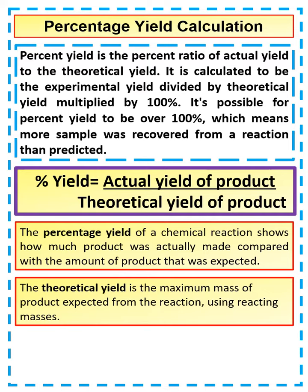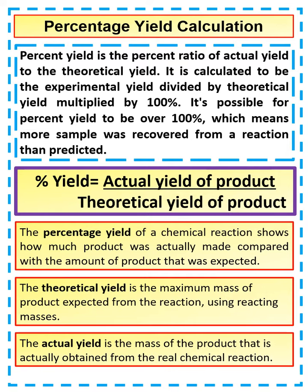The theoretical yield is the maximum mass of product that we can make, theoretically. And the actual yield is the amount of product that we actually make.